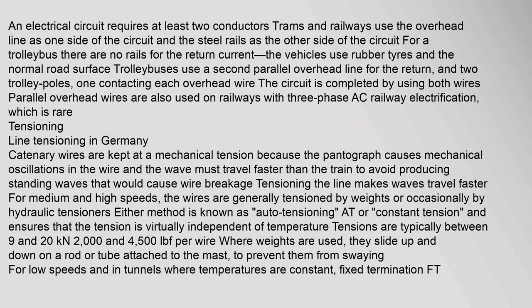An electrical circuit requires at least two conductors. Trams and railways use the overhead line as one side of the circuit and the steel rails as the other side. For a trolleybus there are no rails for the return current — the vehicles use rubber tires and normal road surface. Trolleybuses use a second parallel overhead line for the return, and two trolley poles, one contacting each overhead wire. Parallel overhead wires are also used on railways with three-phase AC railway electrification, which is rare.